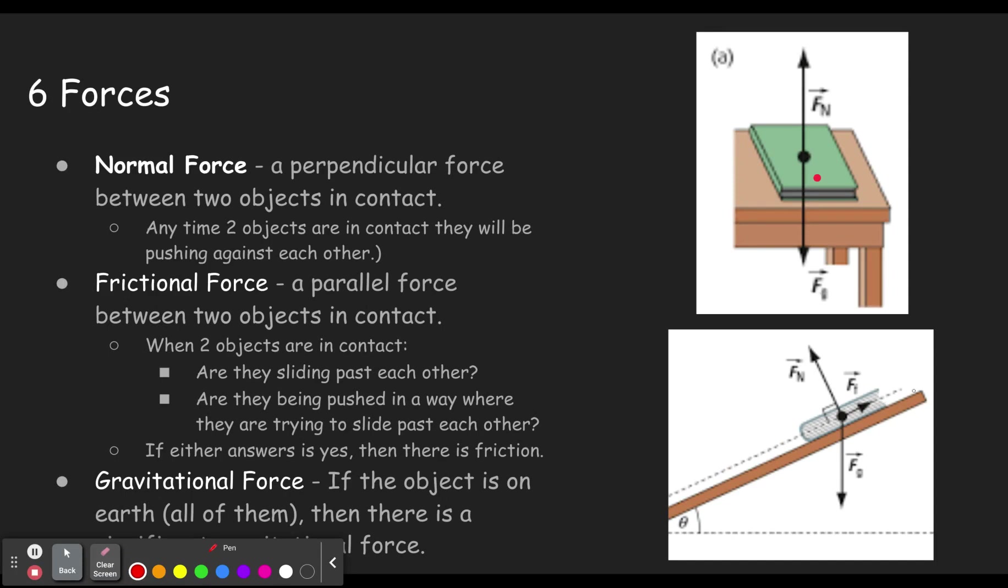Finally, there is the gravitational force. We see that the gravitational force, if an object is on Earth, which is all the examples you have, then there is a significant gravitational force. Gravity, we'll learn later, is a force between any two objects. So technically, if there's another object nearby, even if it's not a planet, there would be some gravitational force,